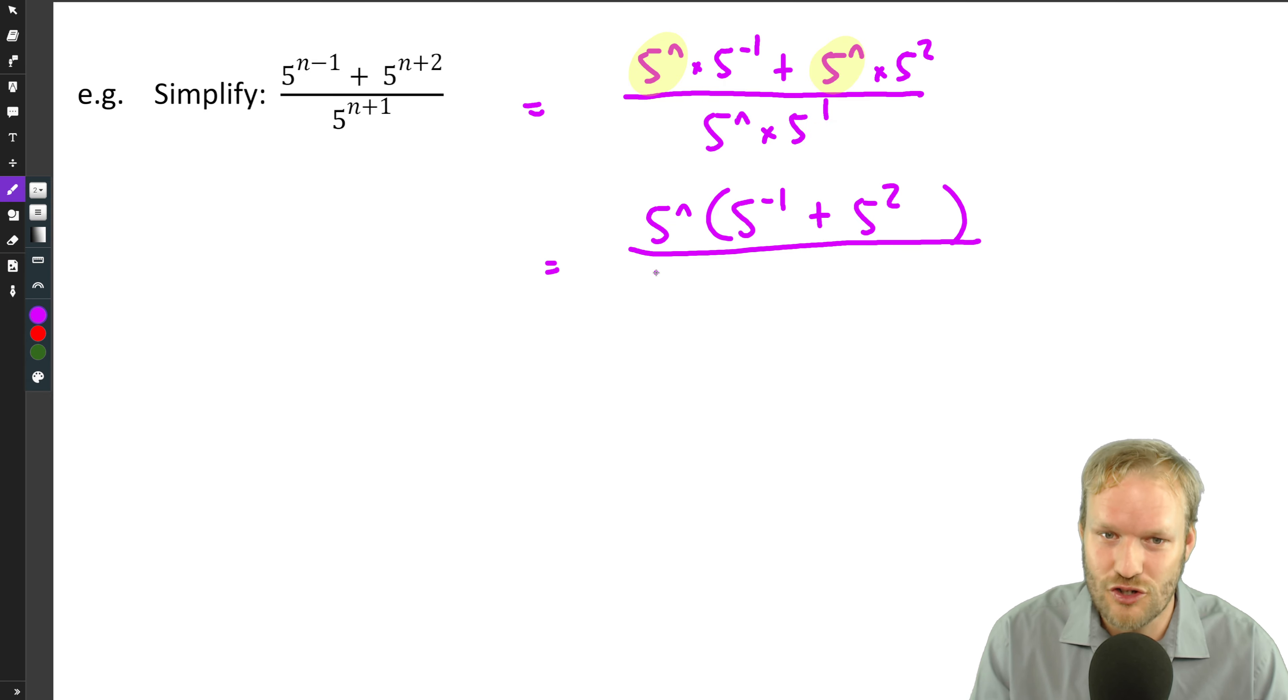Denominator is already one term, so there's no need to do any factorization. One term over one term means that we can safely say 5 to the n goes in there once, 5 to the n goes in there once, which means we're just left with 5 to the minus 1 plus 5 squared over 5 to the 1.